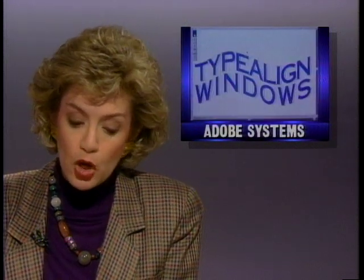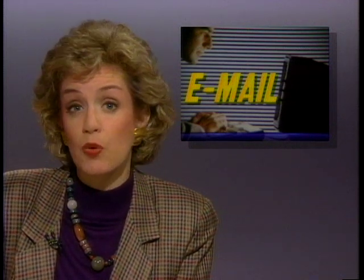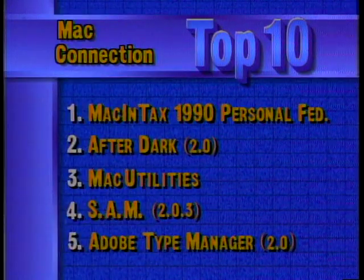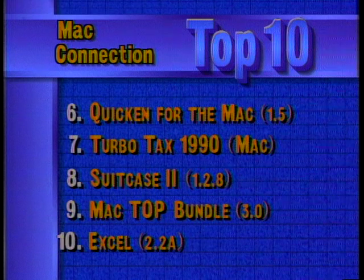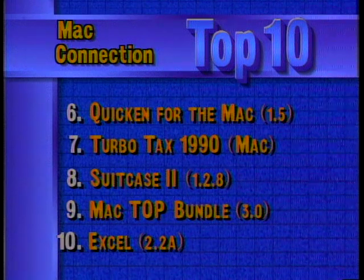You can now order a 486 PC through the mail for about $4,500 — the new Gateway 2000 features a Micronics motherboard with 8 megs of RAM, a 200 megabyte hard disk, and a VGA board and monitor. Adobe Systems has modified its type manipulation program for Windows: Type Align for Windows creates typographic effects such as rotated letters, requires Adobe Type Manager, and sells for $99. Context Scientific and SoftSwitch announced a new email service that automatically downloads late-breaking news into your electronic mailbox based on your specified interests. This week's top 10 Mac software: Software Dispatch Mac Attacks is number one, followed by After Dark, Mac Utilities, SAM, and Adobe Type Manager.